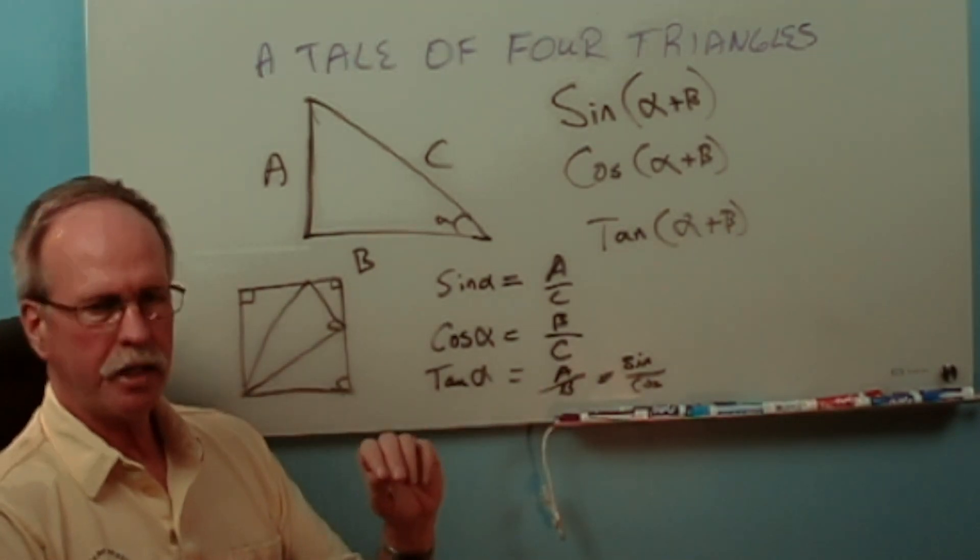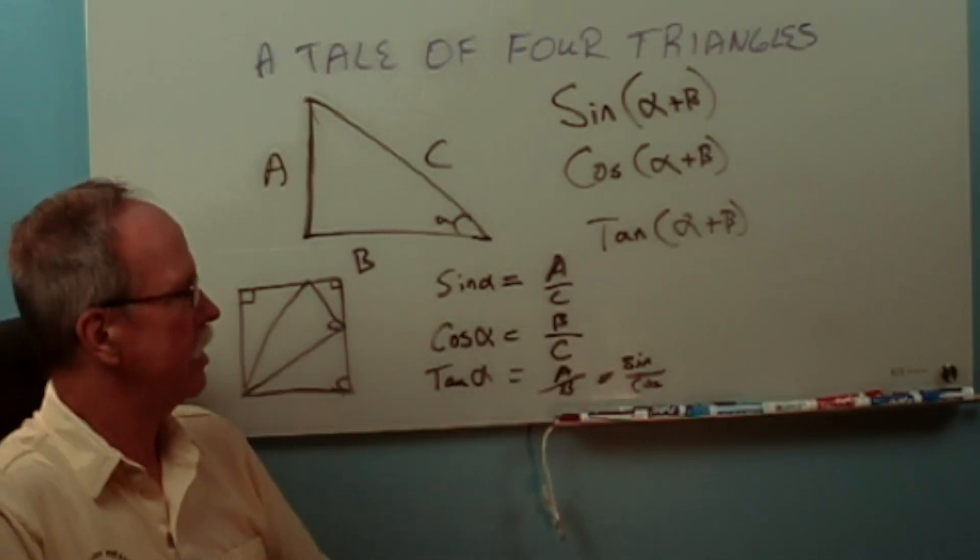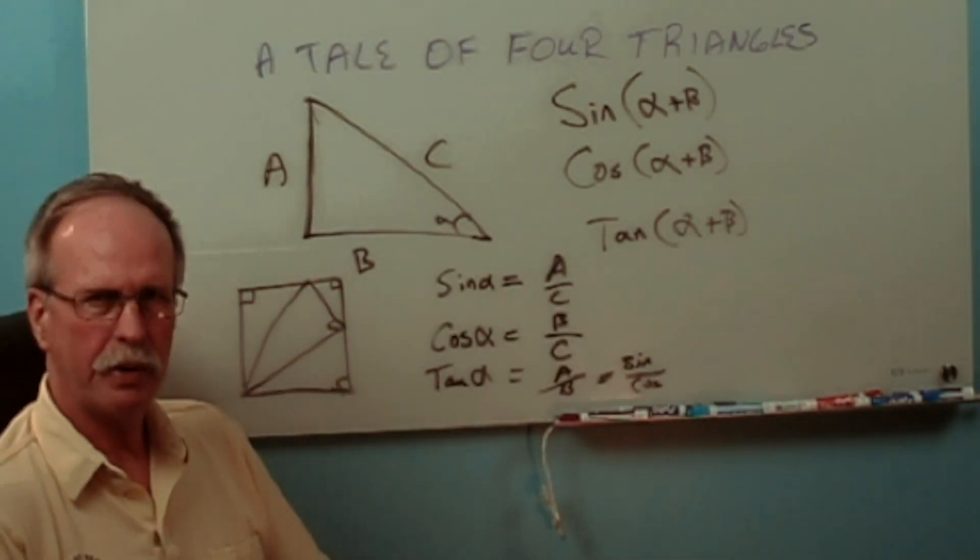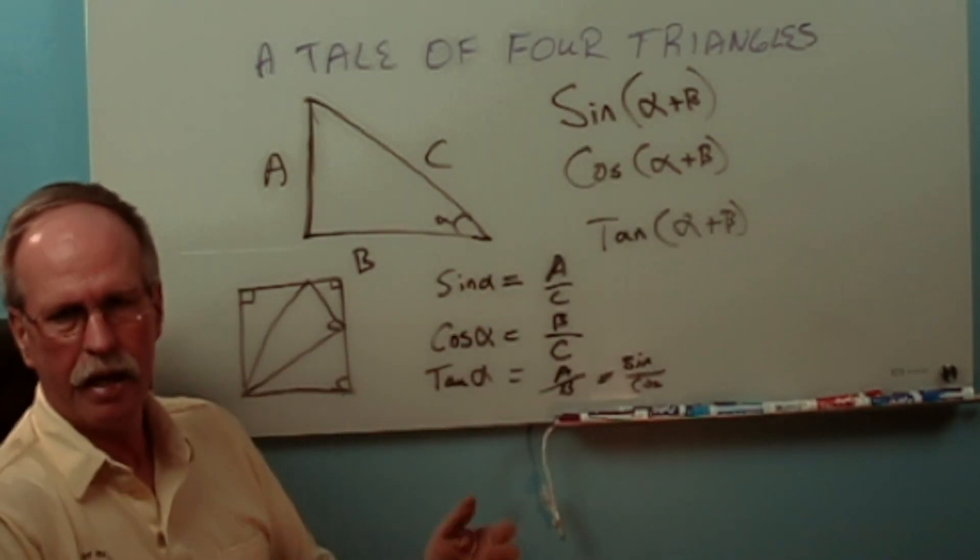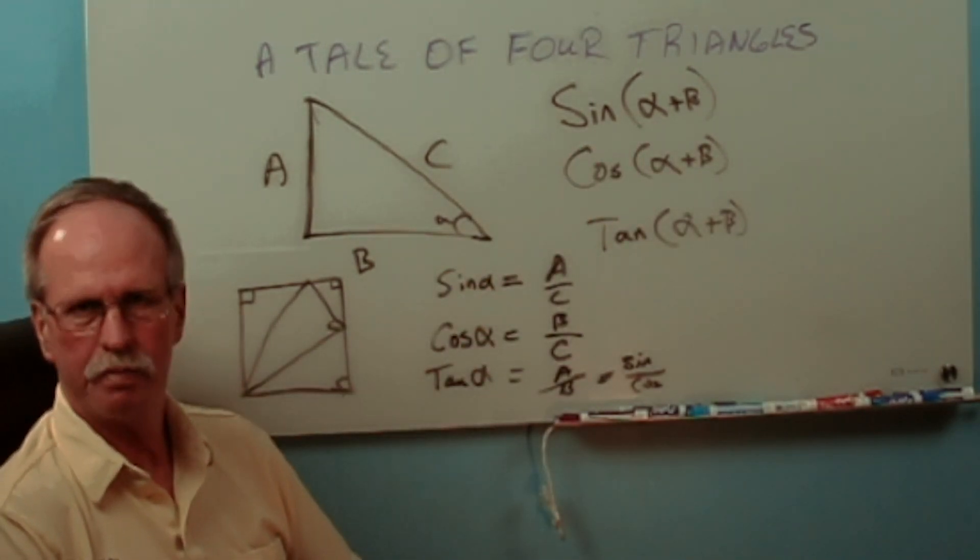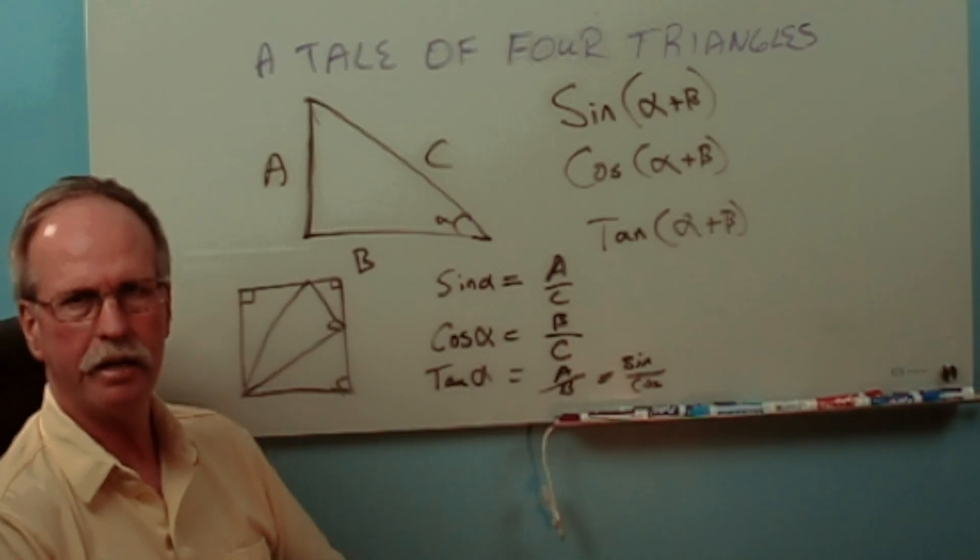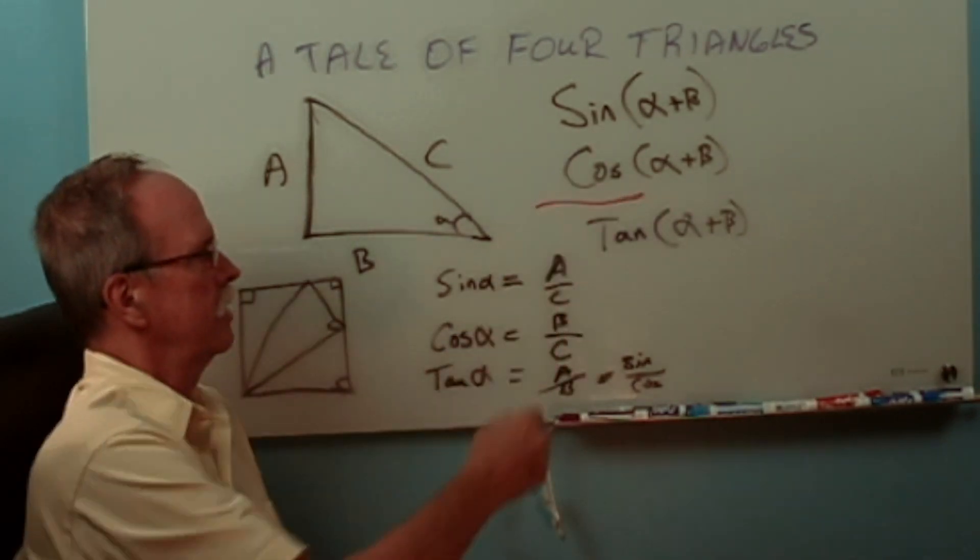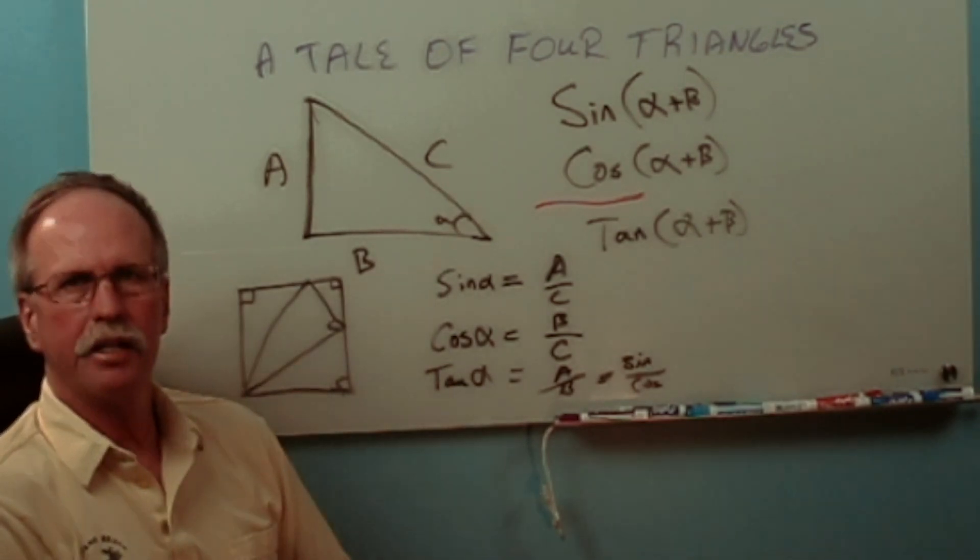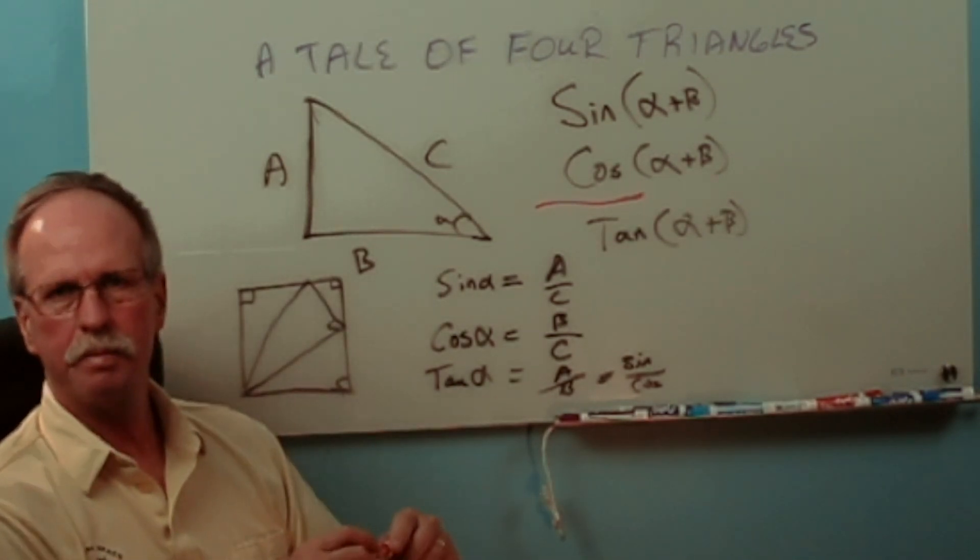Now, here's what we're going to do today. Let's look at these functions right here. What happens if we have two angles, angle alpha and angle beta? How do we find the sine of angle alpha plus angle beta, the cosine and the tangent? What we're going to do in this episode is we're going to look at the sine and the cosine because the tangent is a little bit more complicated.